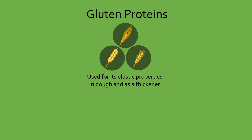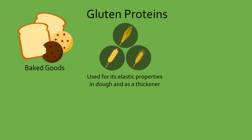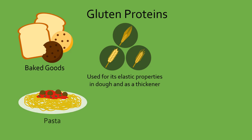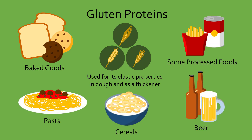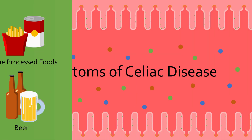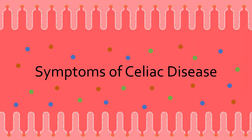So it's not surprising that gluten is found in most baked goods, pasta, cereals, beer, and even some processed foods like french fries and canned soups. What happens when someone with celiac disease eats any of these products? Let's discuss the symptoms.